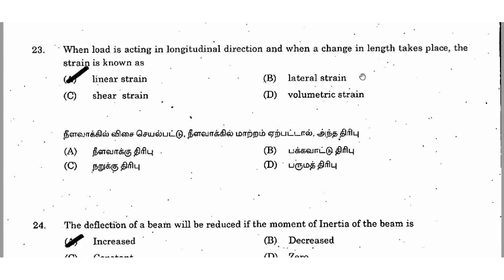Linear strain and lateral strain are inversely related. Lateral strain is equal to minus of linear strain because the sign is inverse. When the length increases under tensile load, the width decreases. So linear strain is positive and lateral strain is negative — the signs are inverse.